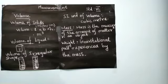Next one is mass and weight. The unit of volume is cubic meter. Mass is the measure of the amount of matter in an object. Mass and weight are different. Weight is the gravitational force experienced by the mass.